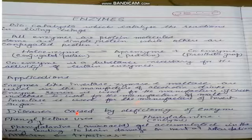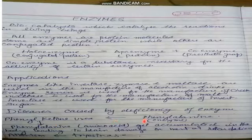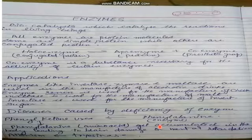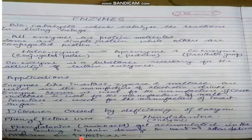There are certain diseases caused by the deficiency of enzymes. The first one is phenylketonuria, which is caused by the deficiency of the phenylalanine hydroxylase enzyme. The amino acid phenylalanine accumulates in the body during the deficiency of this enzyme and leads to brain damage or mental retardation in children. The next one is albinism, which is caused due to the deficiency of tyrosinase enzyme.